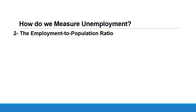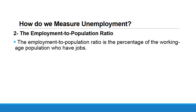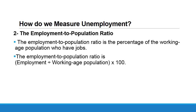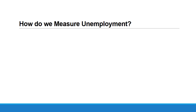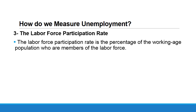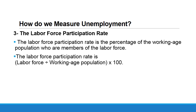The second labor market indicator is the employment-to-population ratio — the percentage of the working-age population who have jobs. We calculate it as: employment divided by working-age population, times 100. The third labor market indicator is the labor force participation rate — the percentage of the working-age population who are members of the labor force. It equals: labor force divided by working-age population, times 100.